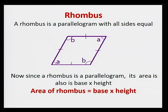A rhombus is a parallelogram with all sides equal. Since a rhombus is a parallelogram, its area is the same as that of the parallelogram. So area of rhombus is base times height.